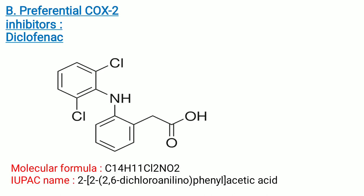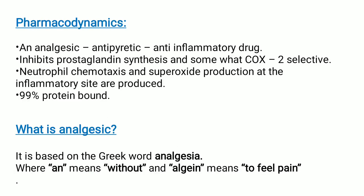Second category is preferential COX-2 inhibitors. We take the example of diclofenac. Its molecular formula is C14H11Cl2NO2. IUPAC name is 2-[(2,6-dichloroanilino)phenyl]acetic acid. Pharmacodynamics: it is used as an analgesic, antipyretic, and anti-inflammatory drug. It inhibits prostaglandin synthesis and is somewhat COX-2 selective. Neutrophil chemotaxis and superoxide production at the inflammatory site are inhibited. It is 99% protein-bound.